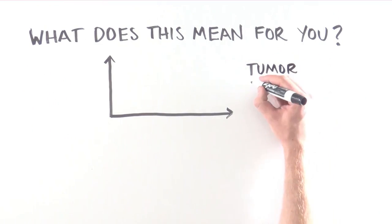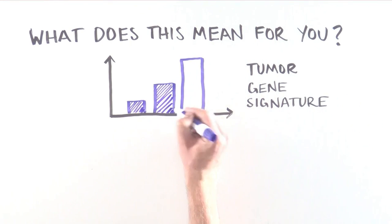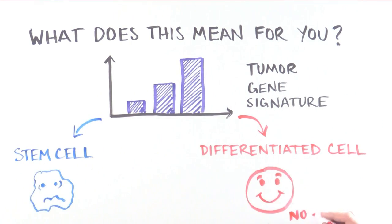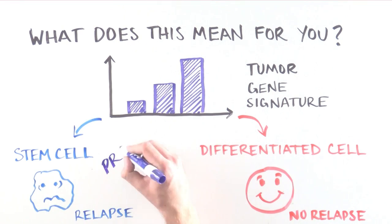So what does this mean for you? Using the gene signature of a tumor, is it stem cell-like, or does it resemble differentiated cells? We can now predict tumor relapse better than disease score can. So this is very significant.